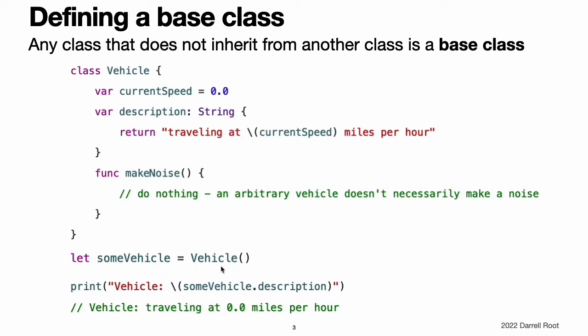The makeNoise method does not actually do anything for a base vehicle instance but will be customized by subclasses of Vehicle later on. You create a new instance of Vehicle with initializer syntax, which is written as a type name followed by empty parentheses. Having created a new Vehicle instance, you can access its description property to print a human-readable description of the vehicle's current speed. The Vehicle class defines common characteristics for an arbitrary vehicle but is not much use in itself. To make it more useful, you need to refine it to describe more specific kinds of vehicles.